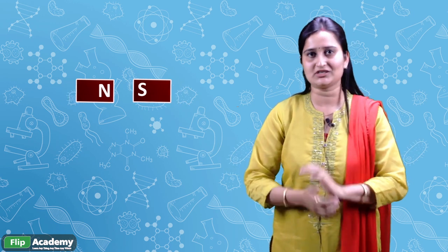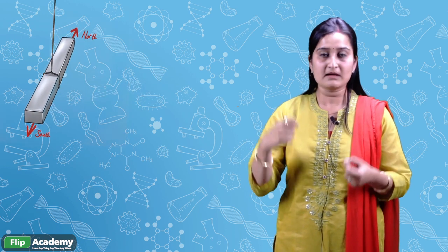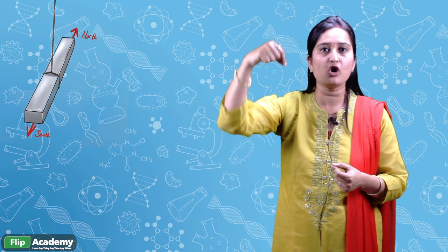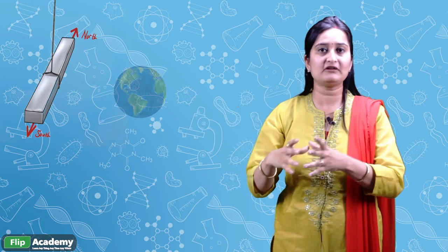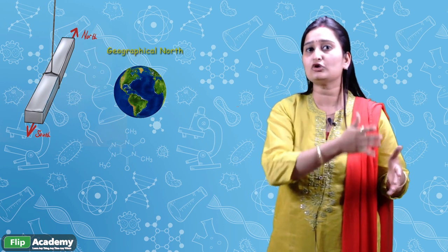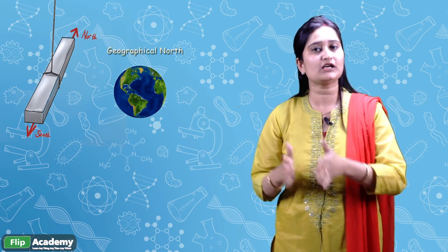When opposite polarities — one north and one south — come into contact, attraction takes place. Apart from that, if we freely suspend a magnet through a thread, in that condition the north polarity of the magnet points towards the geographical north, and the south polarity of the magnet points towards the geographical south.